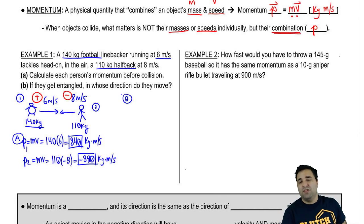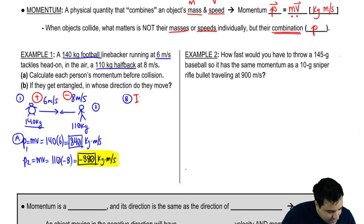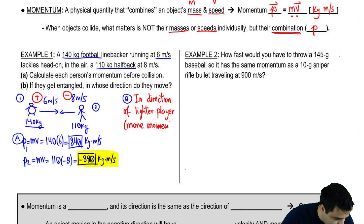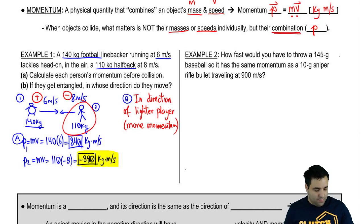It has to do with your momentum. And because the lighter guy has more momentum, if they get stuck, they will move in the direction of the lighter player. And the reason for that is because he has more momentum. Cool? So he's going to win because he has more momentum.